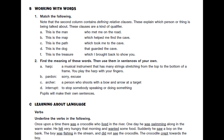Find the meanings of these words, then use them in sentences of your own. Harp: a musical instrument that has many strings stretching from the top to the bottom of a frame. Pardon: sorry, excuse. Archer: a person who shoots with a bow and arrow at a target. Interrupt: to stop somebody from speaking or doing something.